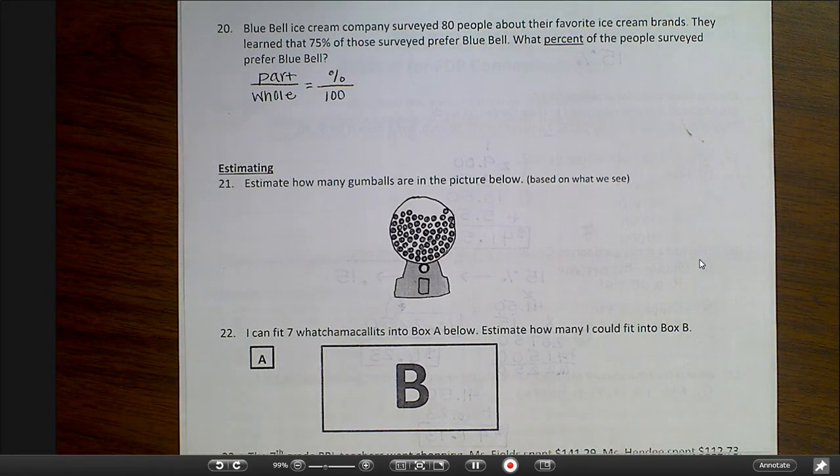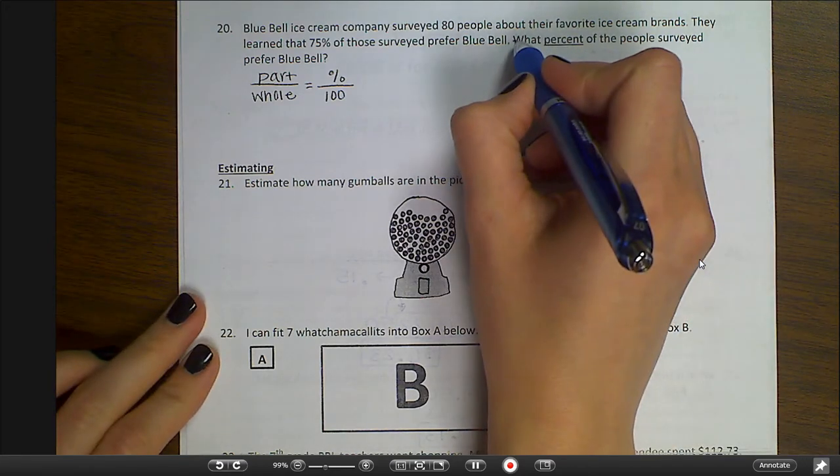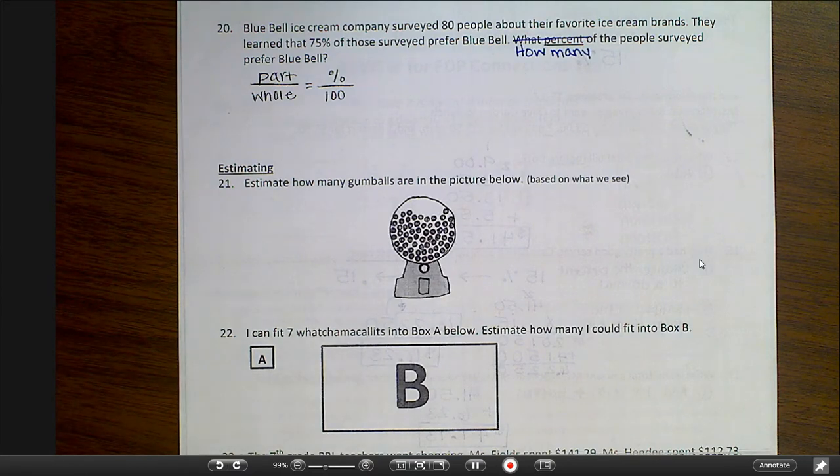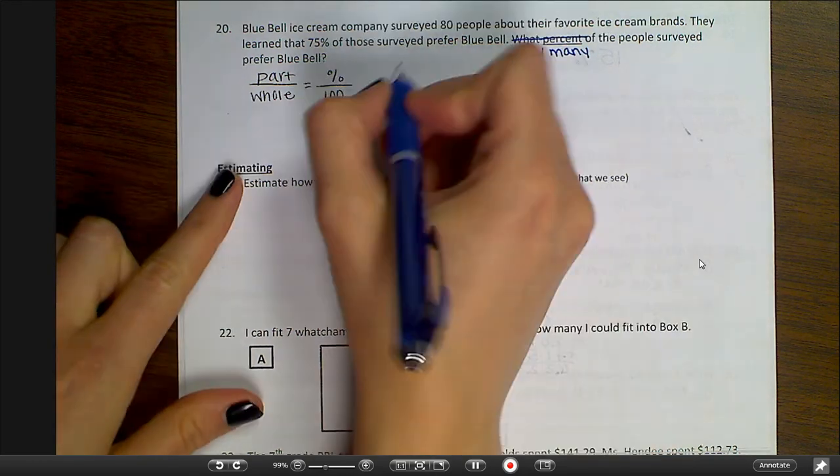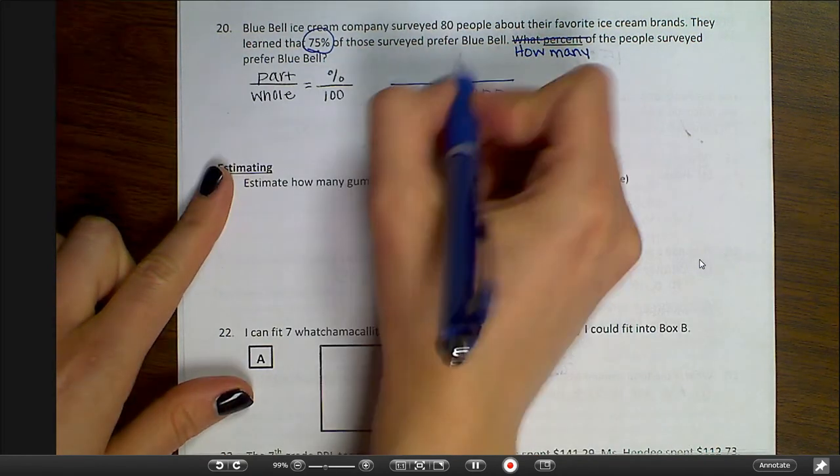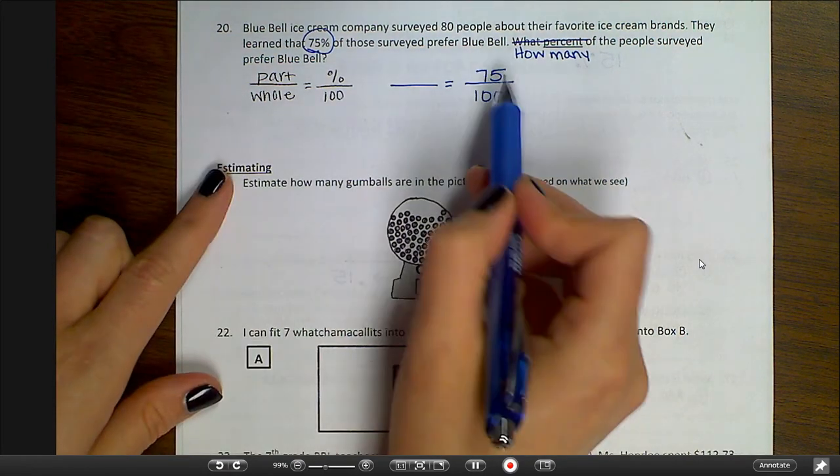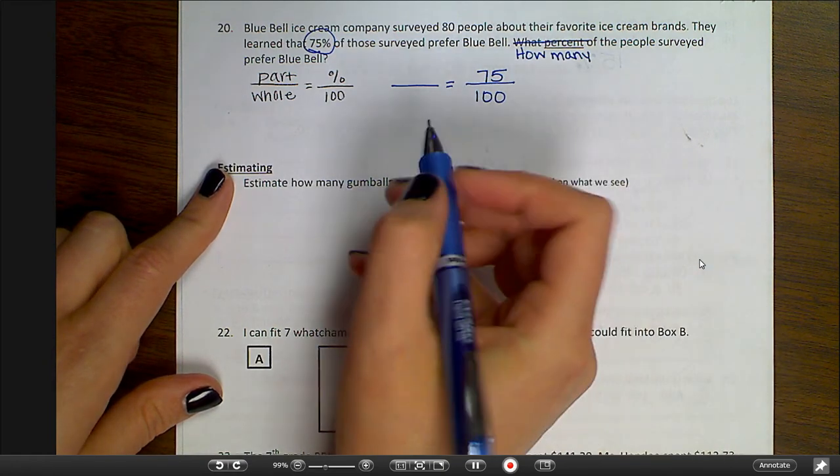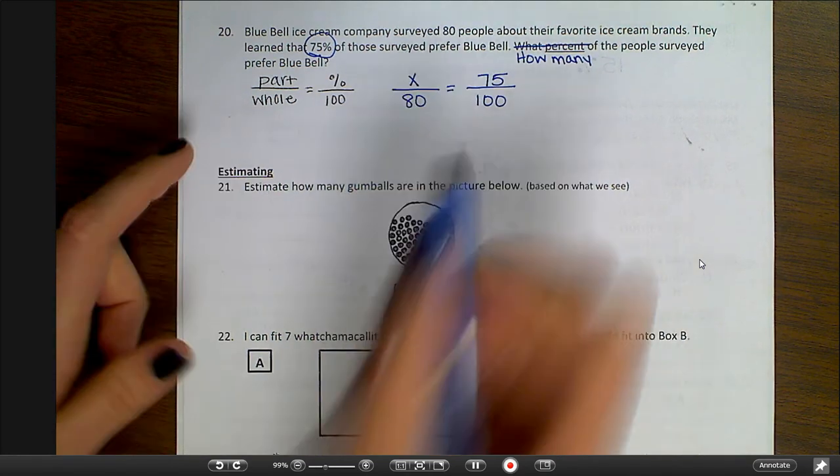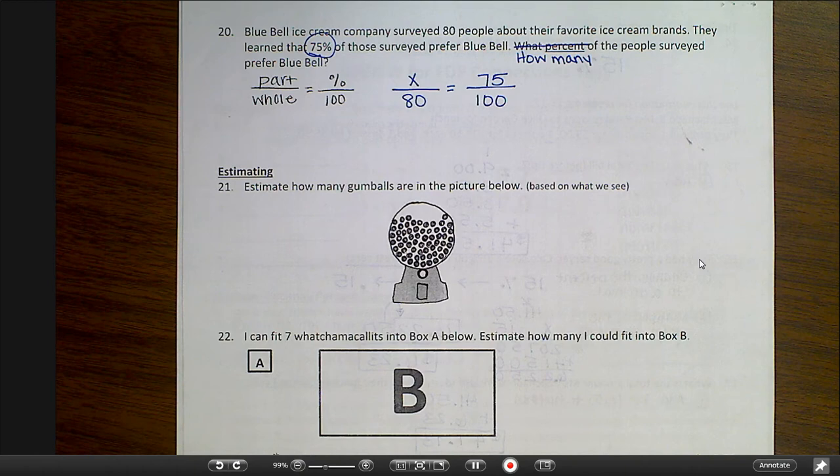Number 20. Blue Bell Ice Cream Company surveyed 80 people about their favorite ice cream brands. They learned that 75% of those surveyed prefer Blue Bell. It should say how many of the people surveyed prefer Blue Bell. So this is the same kind of situation. Part over whole equals percent over 100. And I know 75%. That's the easiest one to place. Or if I don't know the percent, I know that the X goes there. And they surveyed a total of 80 people. So I want to know how many actually prefer Blue Bell. So in this case, there's not a really simple, easy way for me to find a relationship, even though there's always a relationship in a proportion. So I am going to cross multiply.